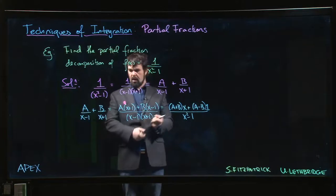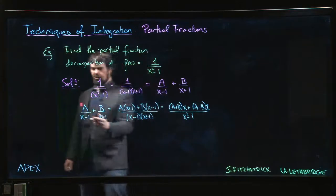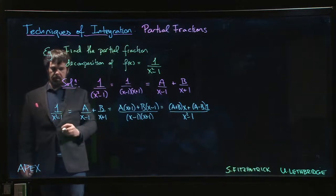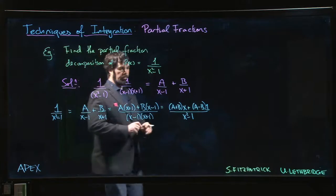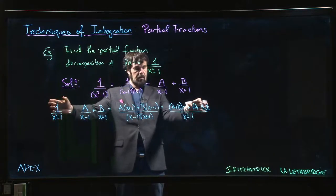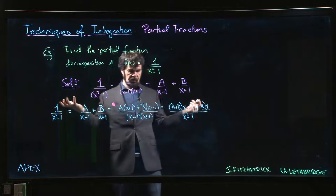Okay, and now of course this is supposed to be equal to 1 over x squared minus 1. So we compare this to that. We say the denominators are the same, so the numerators must also be the same.